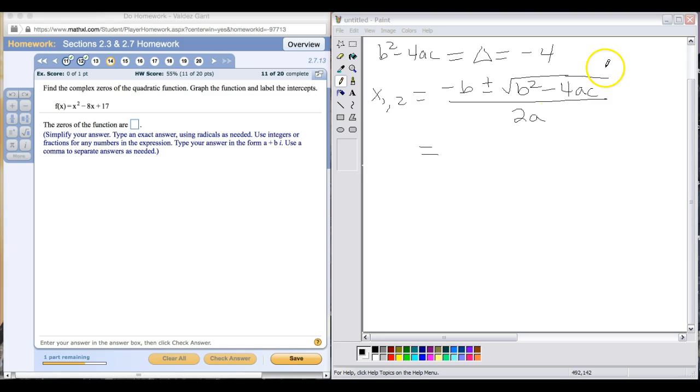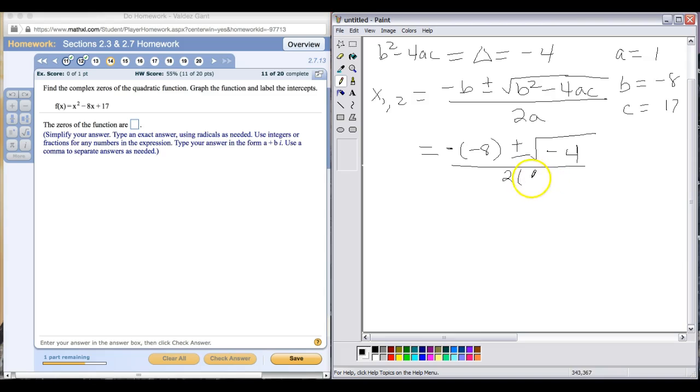Now that we've got everything cleared out, we know our A is 1, B is negative 8, and C is 17. Through our negative B, which is negative of negative 8, plus or minus square root of, we know this ends up being negative 4, divided by 2 times A, which is 1. Here, minus or negative is the same as addition, so that gives us positive 8 plus or minus. This changes to square root of negative 1 times square root of 4, which gives us 2i.